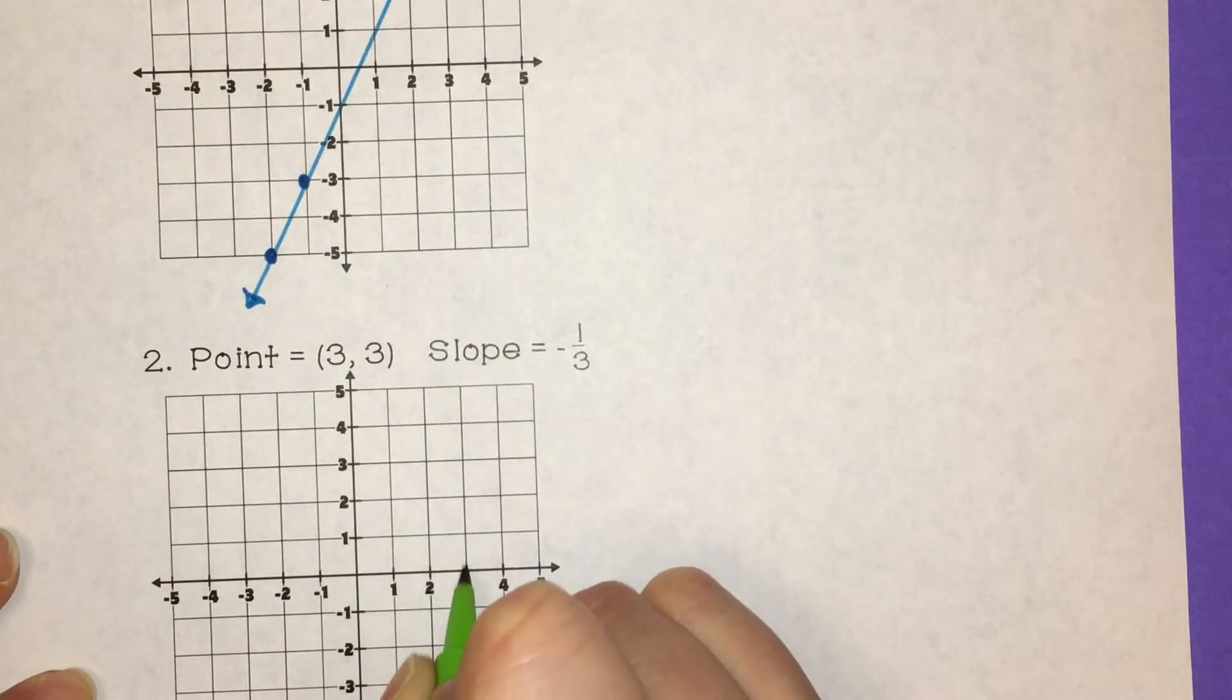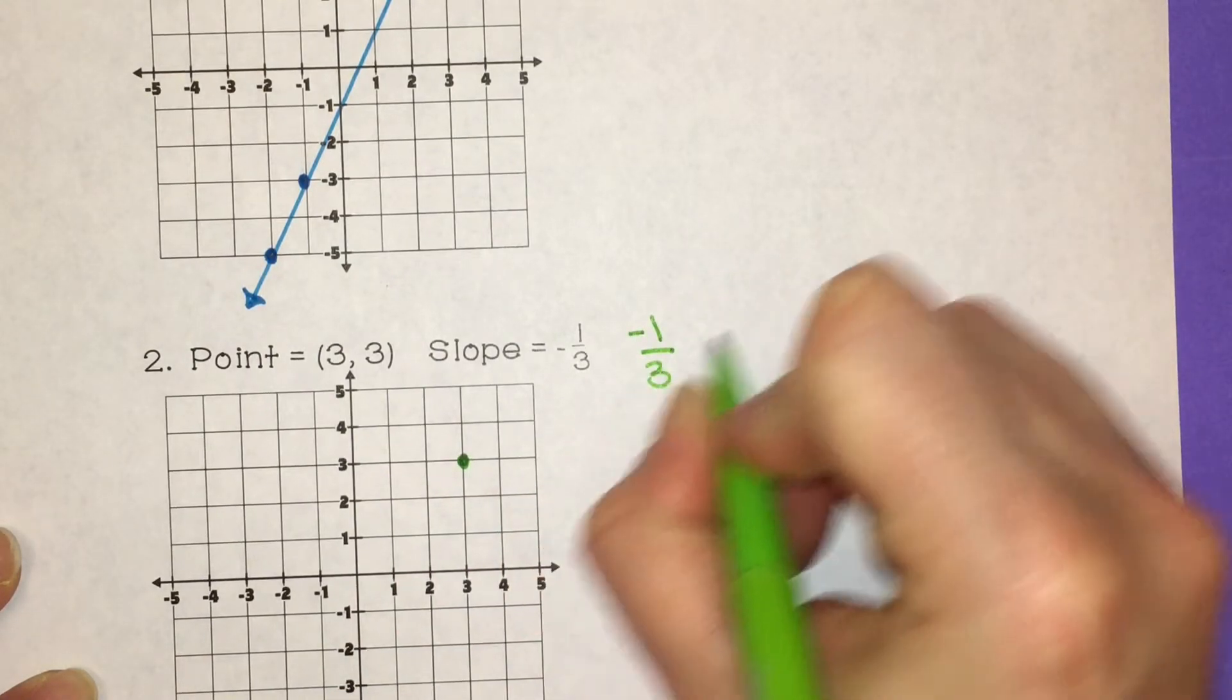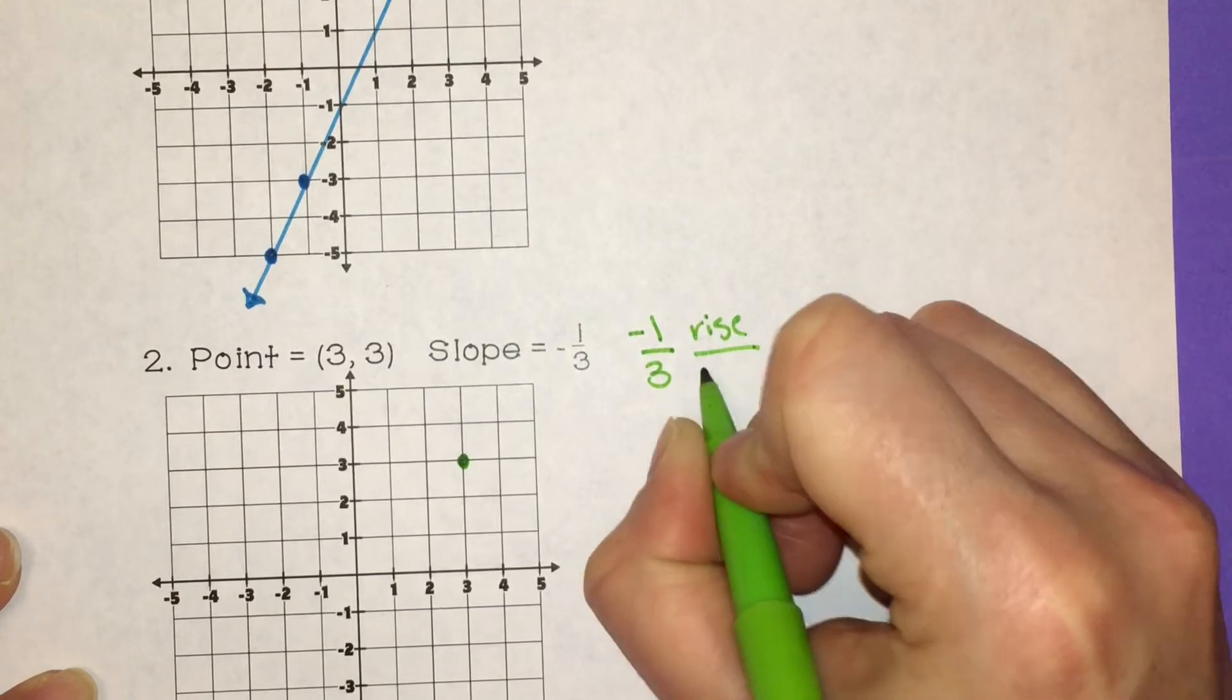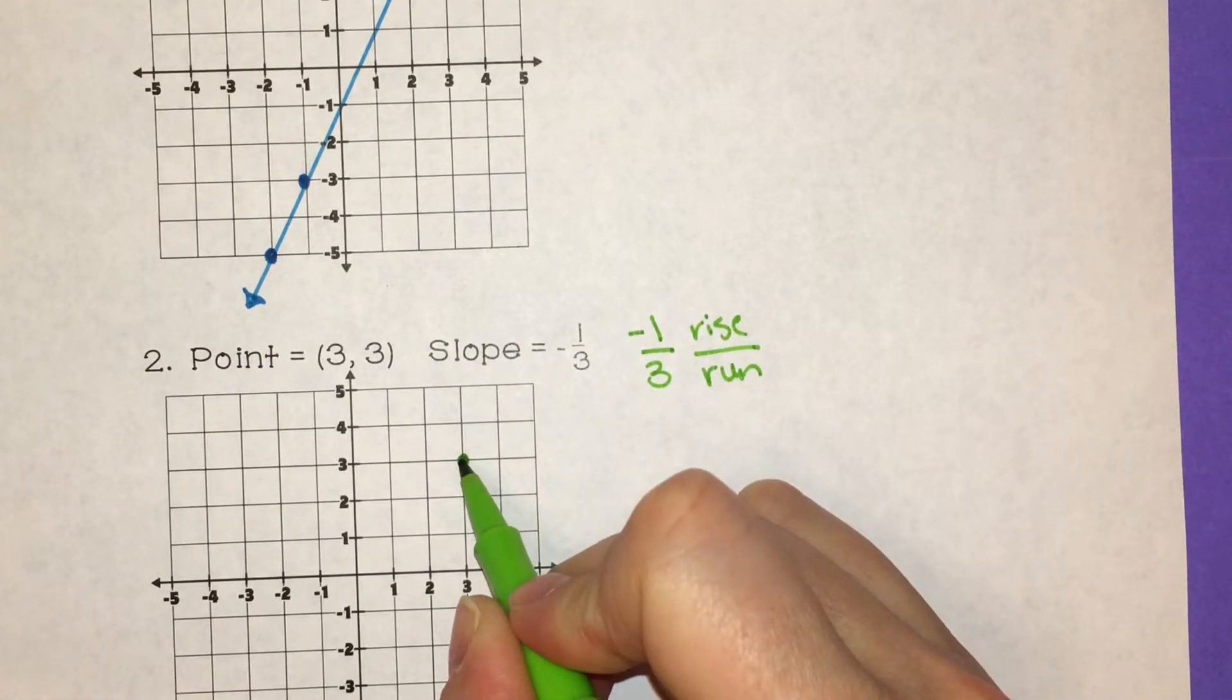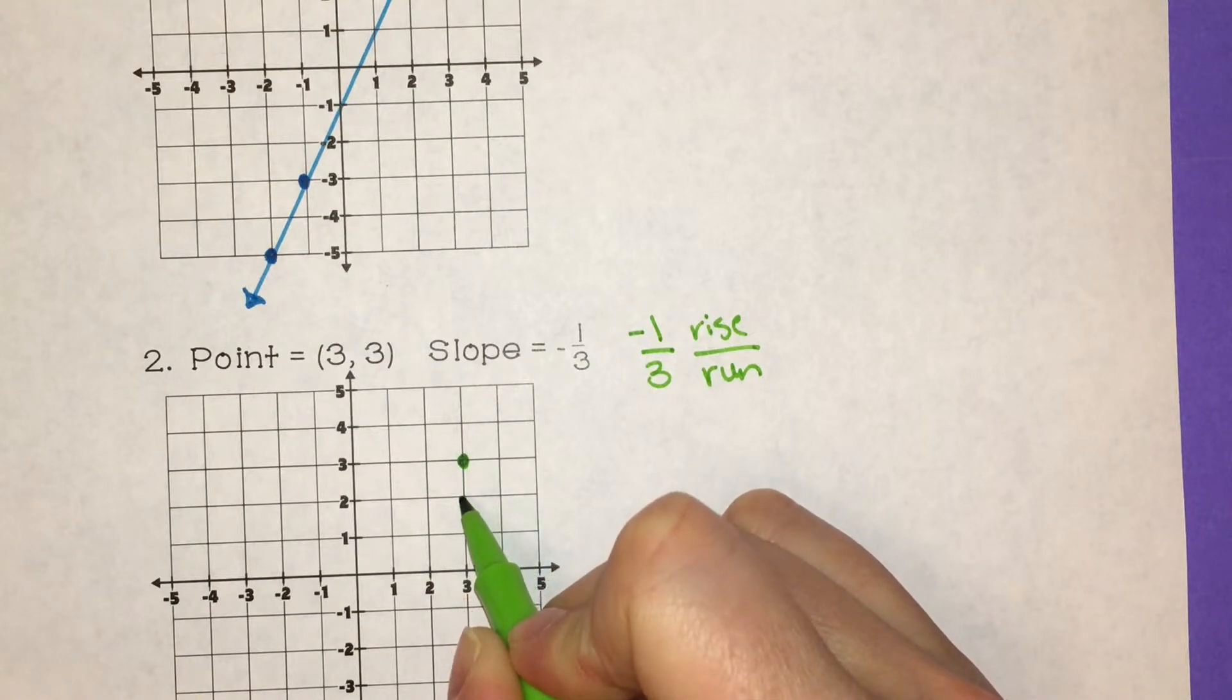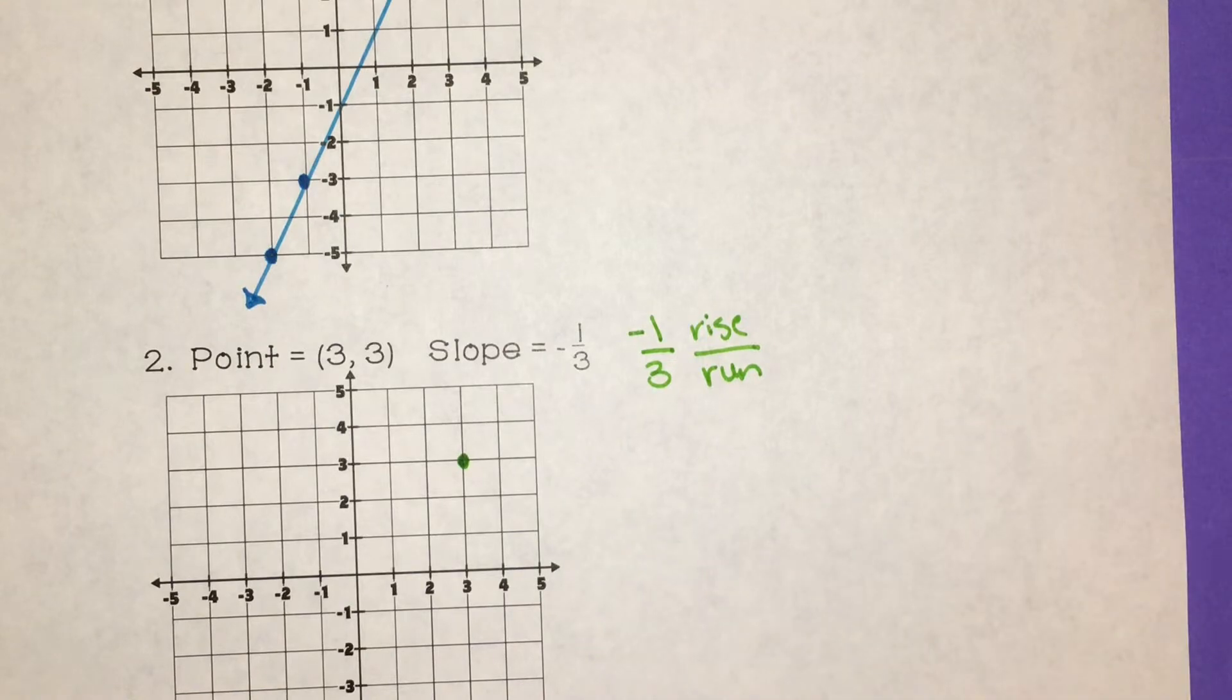Point is (3, 3). Slope is -1 over 3. Rise over run. Remember, I put my negative with the top number. So from our point, our rise is negative 1, so we go down 1. Run is positive 3: 1, 2, 3. Oh, but this puts me off the page. Don't worry.